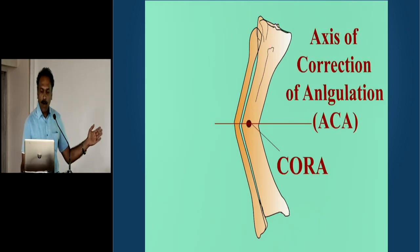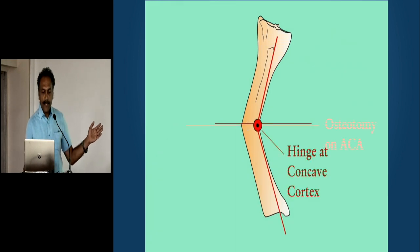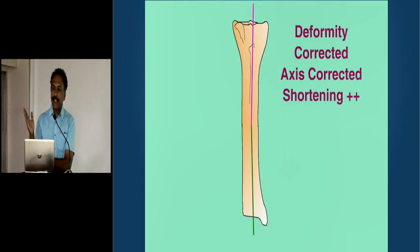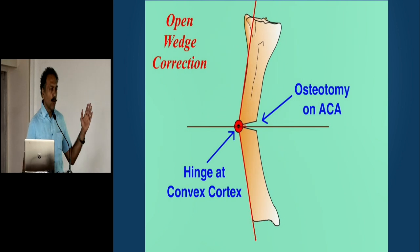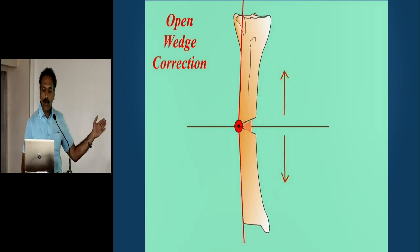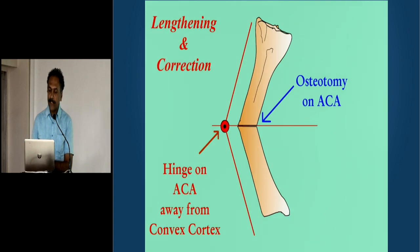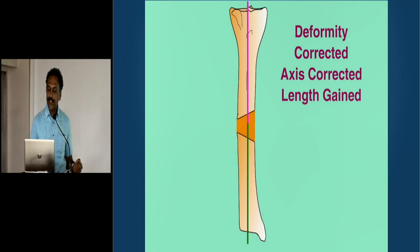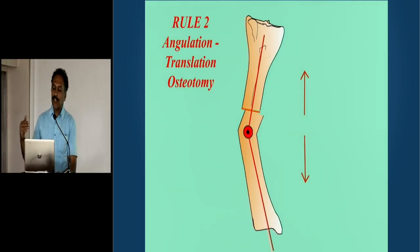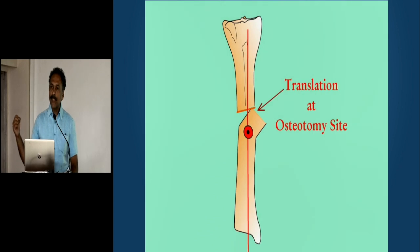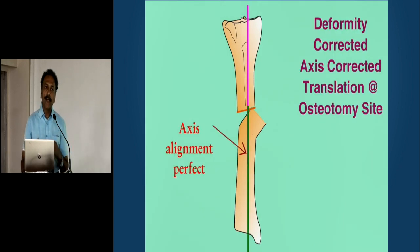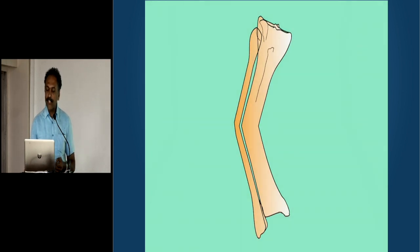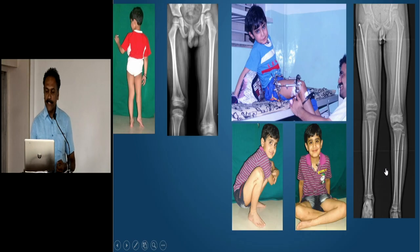Using a standardized deformity model, when you have a deformity, the transverse bisectal line is the axis of correction. By placing the hinges, you can either do a closing wedge osteotomy or an opening wedge osteotomy. If you place it on the convex side, lengthen a triangle of bone, and correct the deformity. If you want lengthening as well, place it away from the convex cortex to achieve length and correction. If you can't perform the osteotomy exactly at the apex, keep the hinge at the right level but perform the osteotomy where it is possible and expedient.